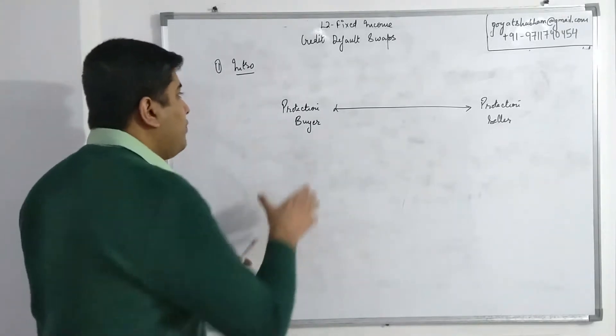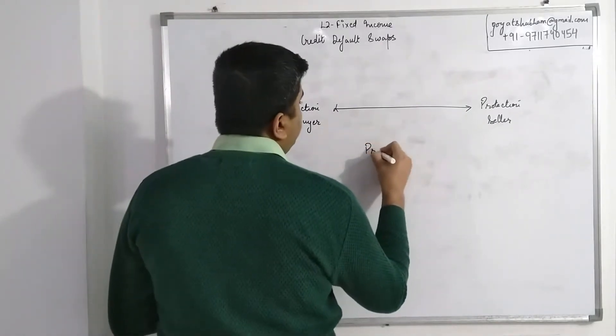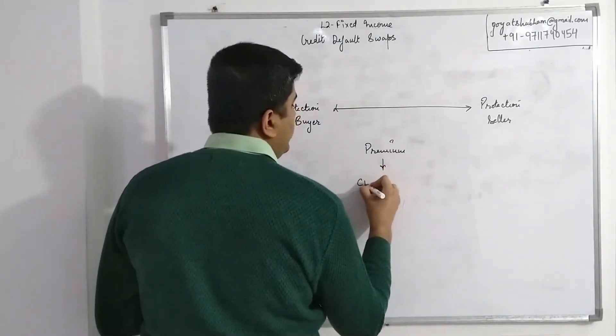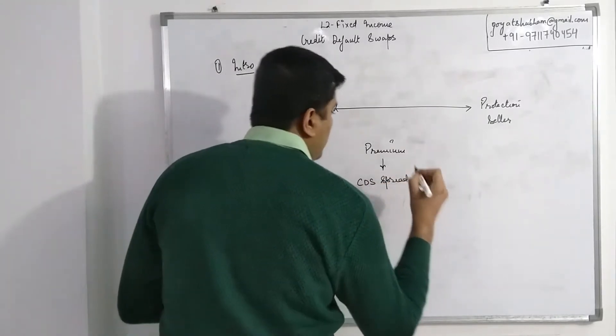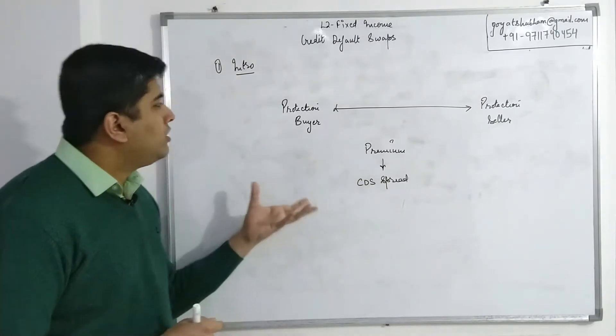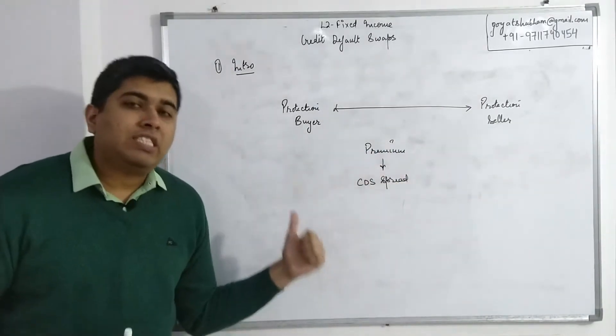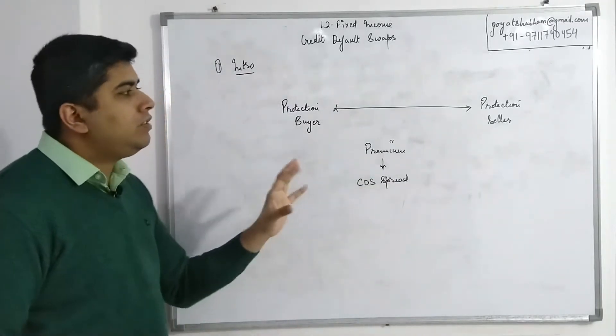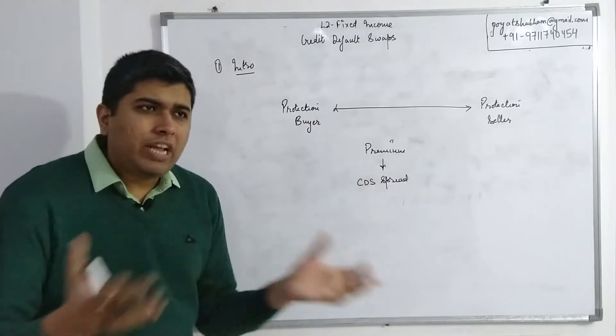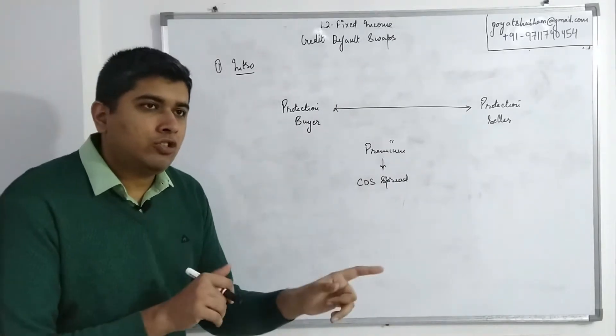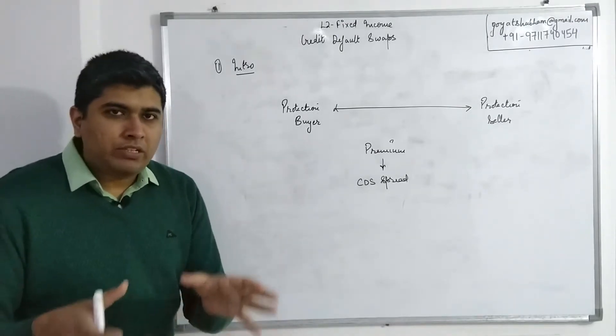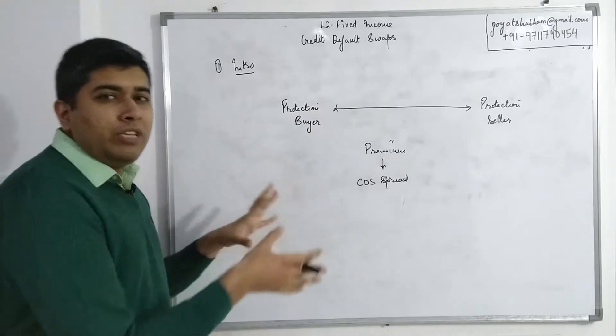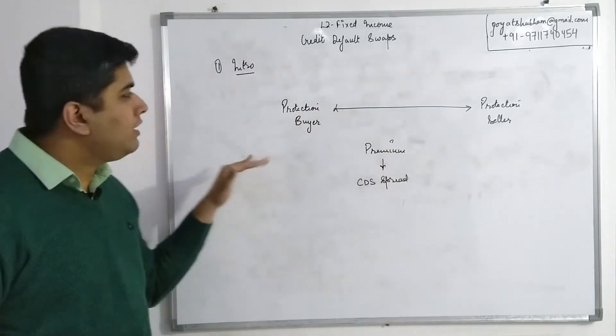Just like I take an insurance policy for my car, I have to pay premium to the insurance company. Similarly, the protection buyer will have to pay a premium. This premium is called CDS spread. CDS spread is basically what premium the protection buyer should pay to the protection seller in order to purchase the CDS, in order to have his risk taken away from it. So this is the structure of the CDS, working exactly the same as how your regular insurance contract works.